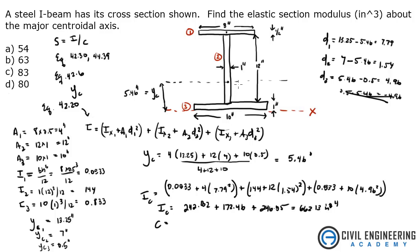And to find C, which is distance from the centroid to the extreme fiber, it's going to be this distance to the top. So from here up to here is going to be 13.5 minus 5.46 and that equals 8.04 inches. So, S equals our I over C. 662.13 divided by 8.04. That gives me 83.35. The answer is C.